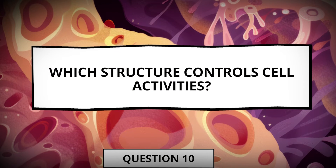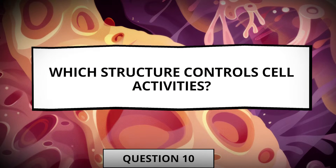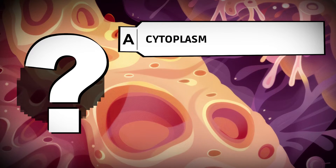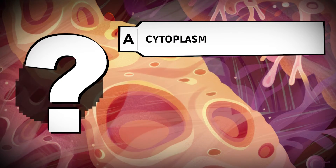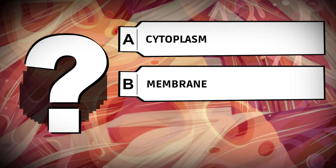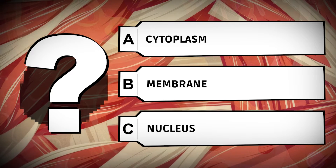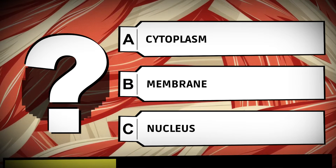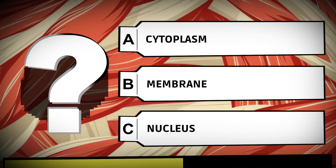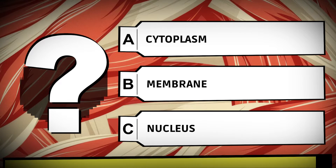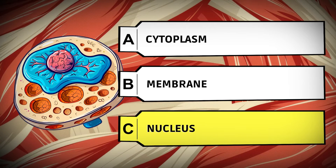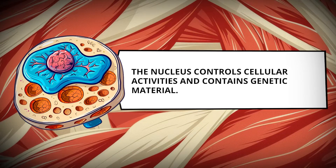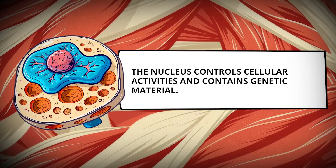Which structure controls cell activities? Cytoplasm. Membrane. Nucleus. The nucleus controls cellular activities and contains genetic material.